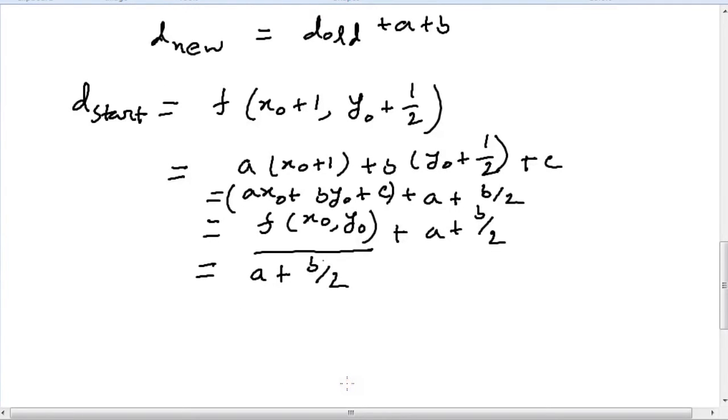So d_start is nothing but a plus b/2, or we can write this as dy minus dx/2, because b was equal to minus dx.